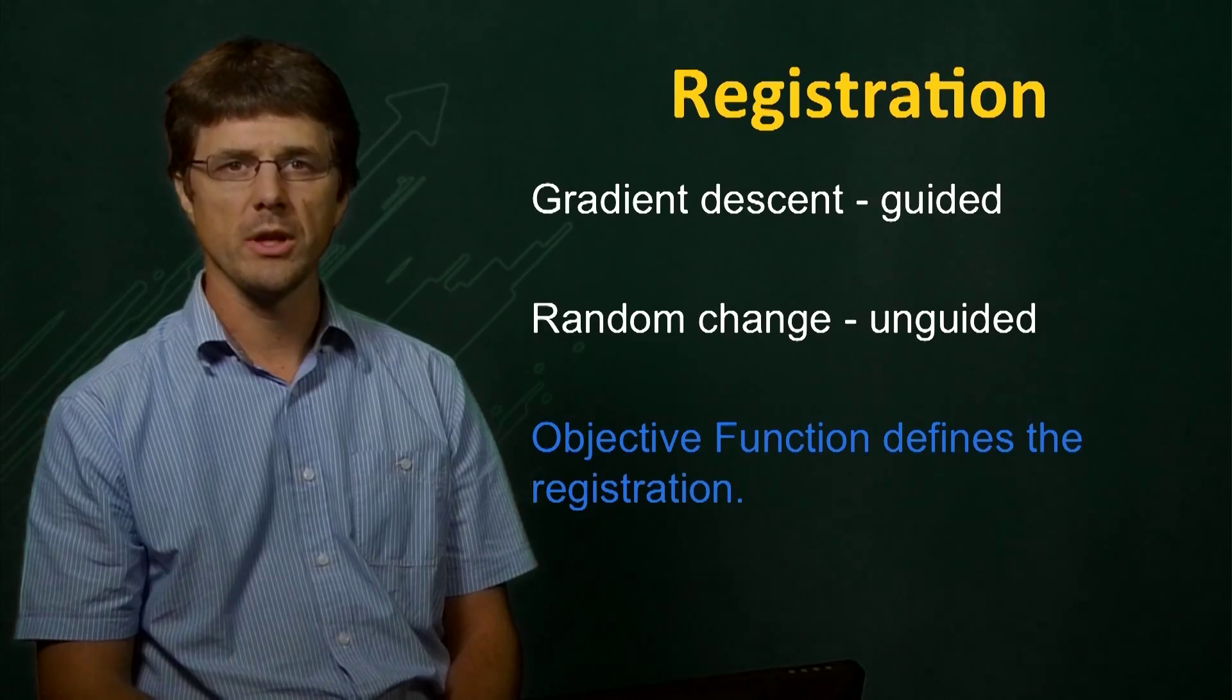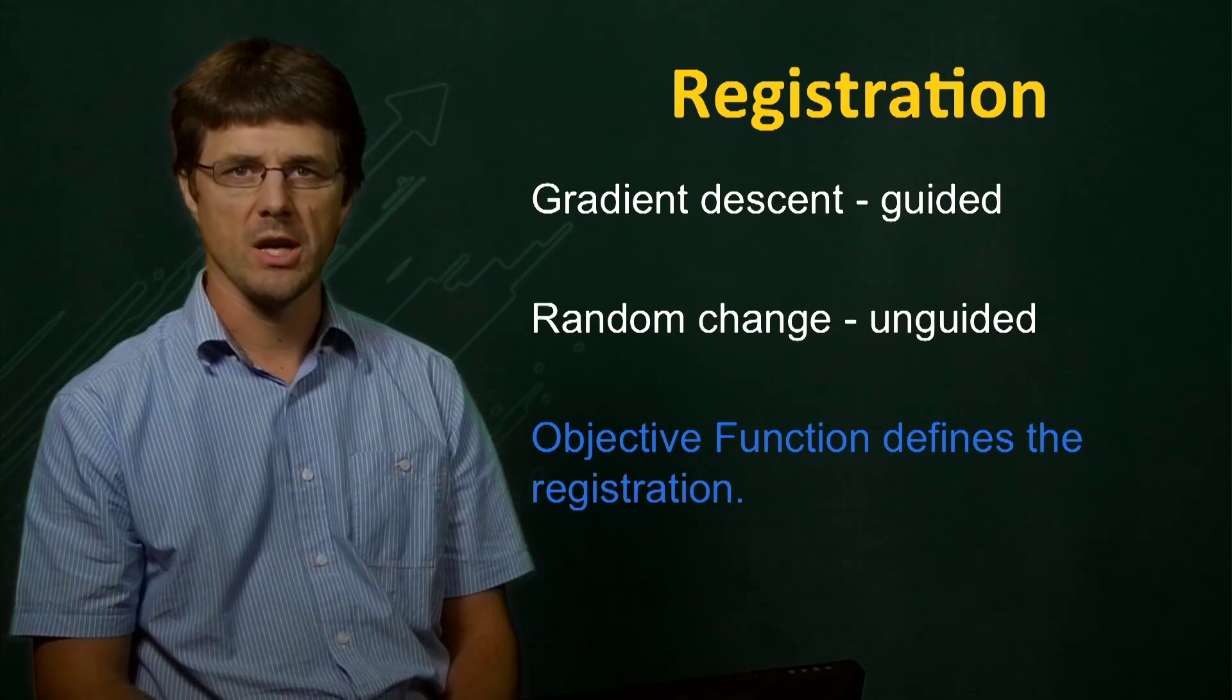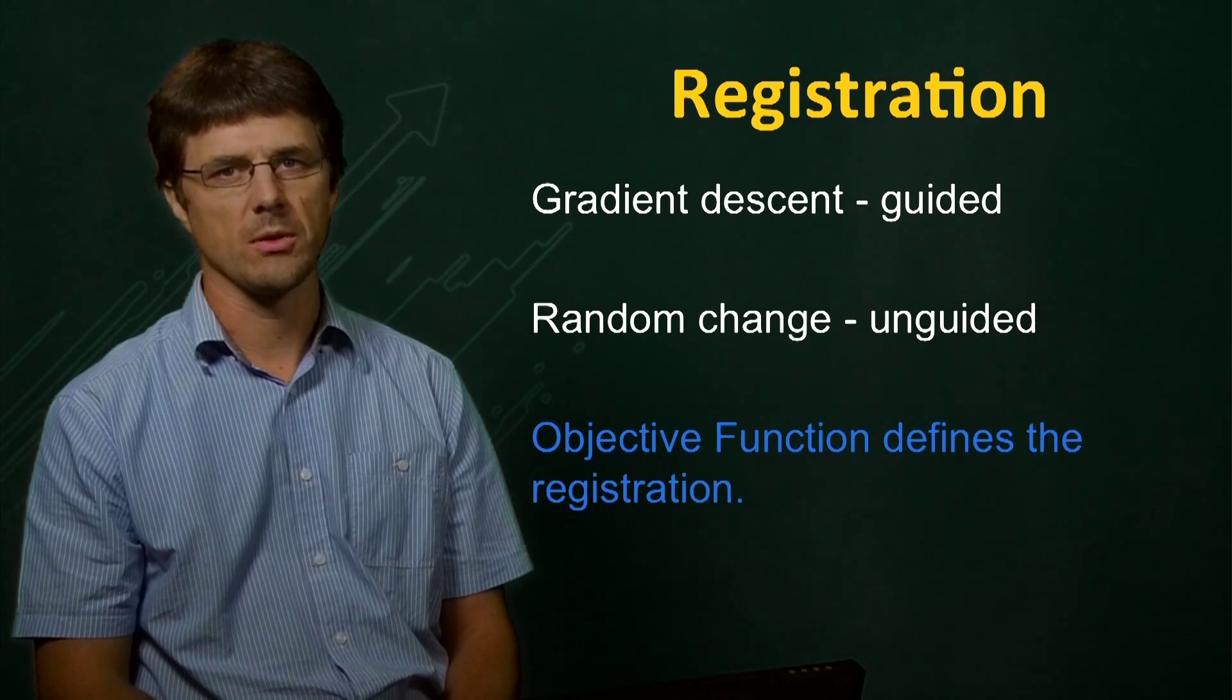It is important to realize that if a gradient descent method is used, the chosen objective function must be able to accurately reflect how closely two images are aligned.